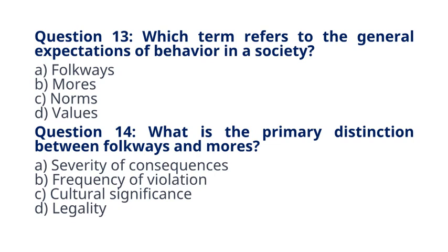Question 14. What is the primary distinction between folkways and mores? A. Severity of consequences. B. Frequency of violation. C. Cultural significance. D. Legality. The correct answer to question 14 is option C, Cultural significance. Explanation: The primary distinction is cultural significance, with mores being more culturally significant than folkways.